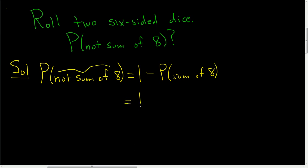So this is equal to one minus, and this will be a fraction. And in the numerator, we're going to have the number of ways to get a sum of eight.